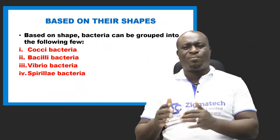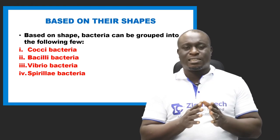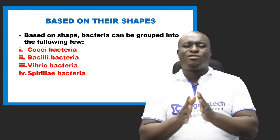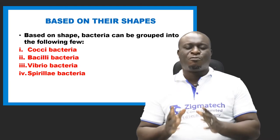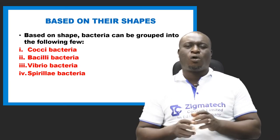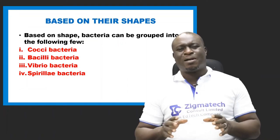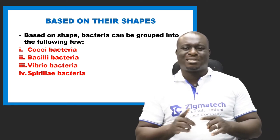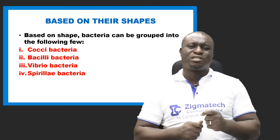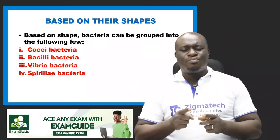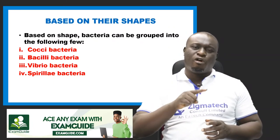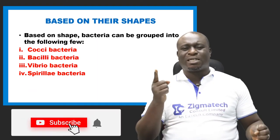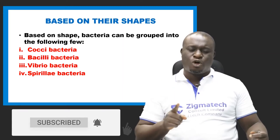Bacteria can also be classified based on shape. Based on shape, we have four types: cocci bacteria, which are spherical; bacillus or bacilli bacteria, which are rod-like; vibrio bacteria, which have a curved shape like a comma; and spirulae bacteria, which have a twisted or spiral shape.